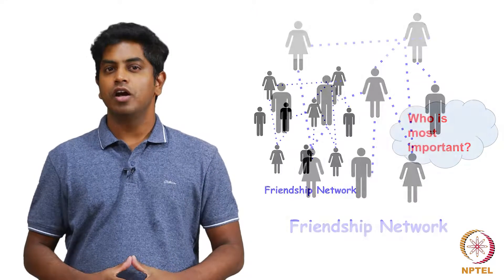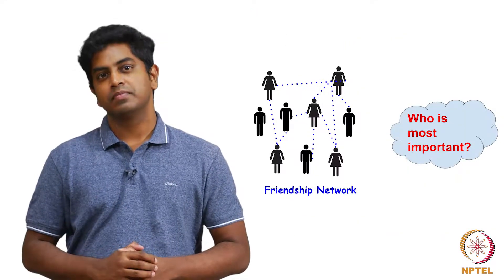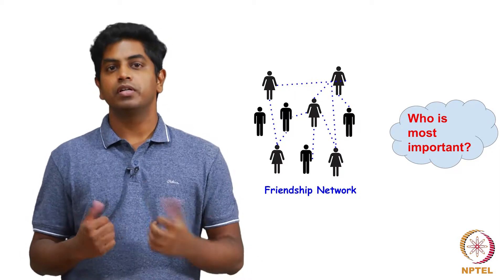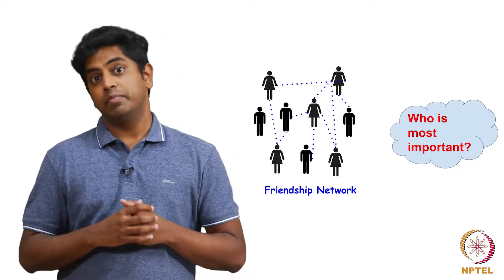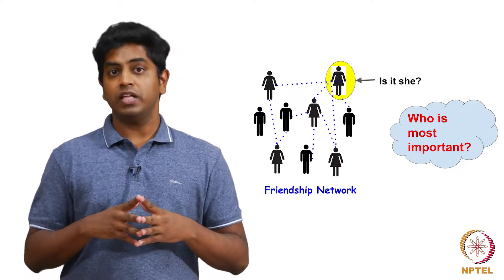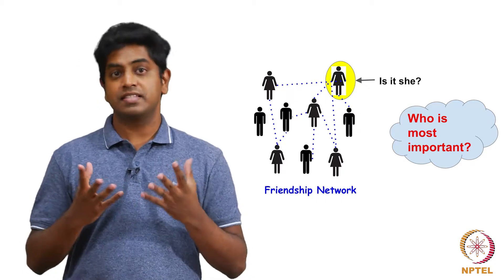Given a friendship network, who is the most important person? How do we judge who is very important? Do you see who has the maximum number of friendships, or is there something more than just the number of links that one has?